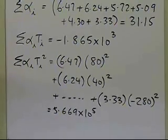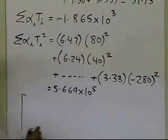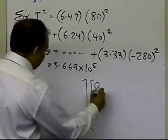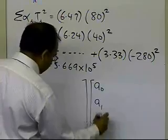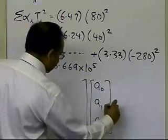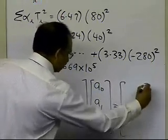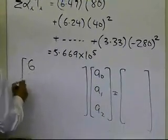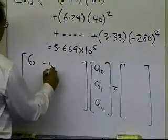Since I've calculated all the numbers, all I have to do now is fill in my coefficient matrix and fill in my right-hand side, so I can set up my three equations and three unknowns. I'll get six here because I have six data points, summation of t_i is minus 520,